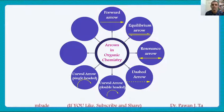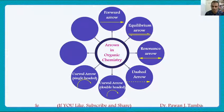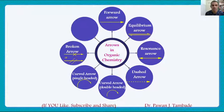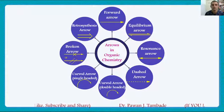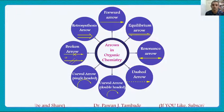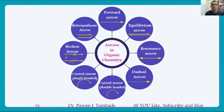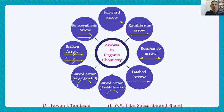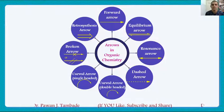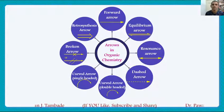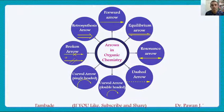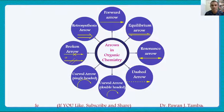The sixth one is the single-headed curved arrow. Then we encounter the broken arrow in some research articles or reference books. Last but not least, which is very common nowadays, is the retrosynthesis arrow. All these arrow notations are used by organic chemists to communicate properly with readers. One by one we will see the important features of each.